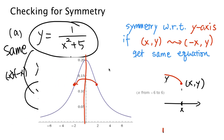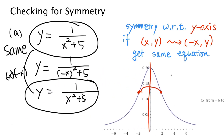Let's review how we checked for symmetry. Basically, we replaced x with negative x and checked whether the result is the same as the original equation. By doing some simple algebra, I was able to tell that the graph should be symmetric without even actually drawing the graph — before drawing it.